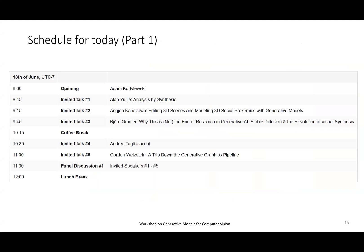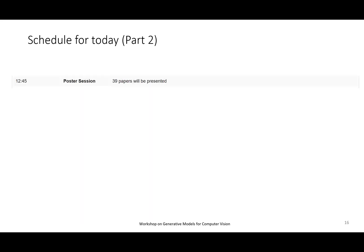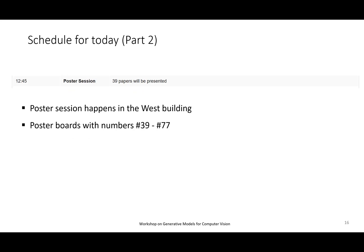The brief schedule: we're going to have three talks in the morning — Alan, Andrew, and Bjorn. Then a 15-minute coffee break, followed by Andrea and Gordon talking about their work. Then a panel discussion from 11:30 to 12. After that, lunch break. In the afternoon, starting 45 minutes later, we have a poster session. For those presenting posters, note that the poster session is in the West building — numbers 39 to 77 are our poster numbers. First come, first served — just walk over and hang your poster up.